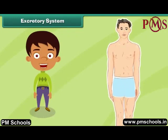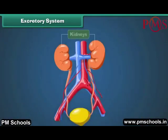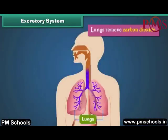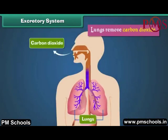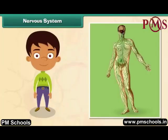The human excretory system is made up of lungs, kidneys and skin. It removes wastes from the human body. Kidneys purify blood and remove excess water from the human body in the form of urine. Lungs remove carbon dioxide. Skin removes waste in the form of sweat.